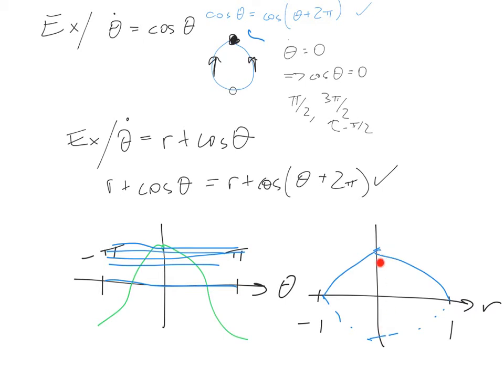So we have two fixed points, and if the parameter dials this way, they disappear in a saddle node and there are no fixed points. If the parameter moves this way, they also disappear in a saddle node.